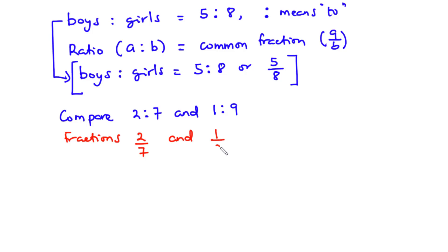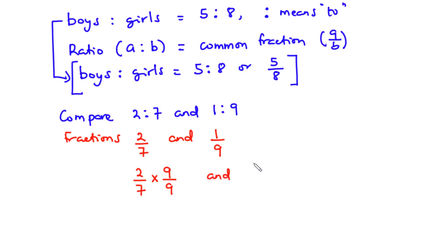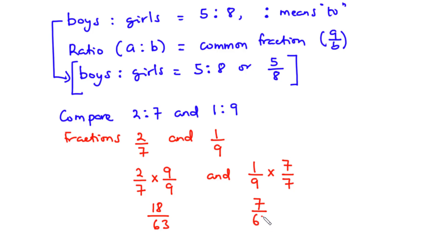Next we rewrite these fractions with a common denominator by multiplying the top and bottom of each fraction by the denominator of the other. So two over seven is multiplied by nine over nine, and one over nine is multiplied by seven over seven. Simplifying: two times nine is eighteen, seven times nine is sixty-three; one times seven is seven, nine times seven is sixty-three. Both fractions now have the same denominator.